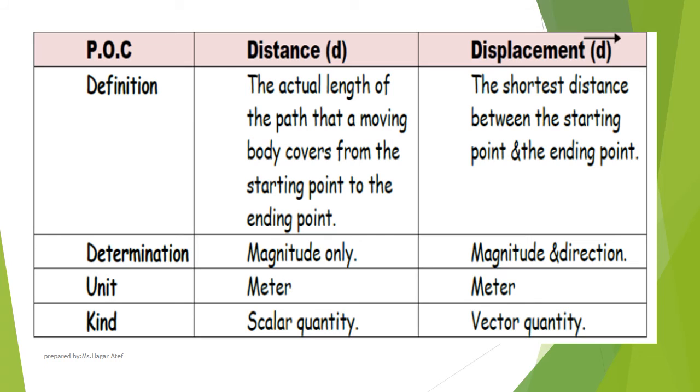For displacement, it's the shortest distance between the starting point and the ending point, determined by magnitude and direction. Its unit is meter, and its kind is vector quantity.